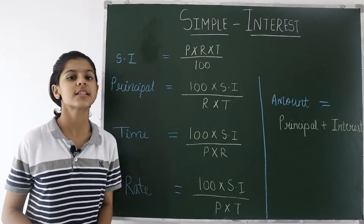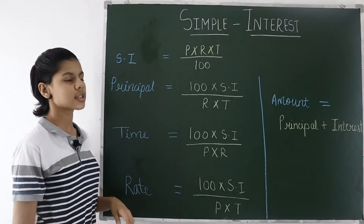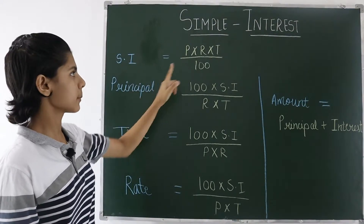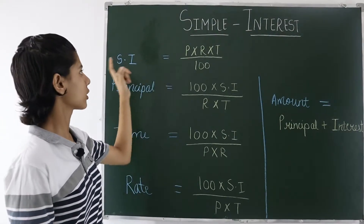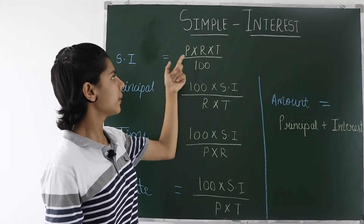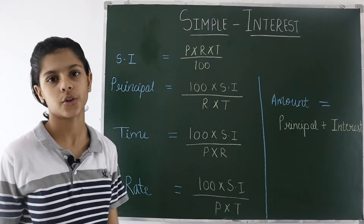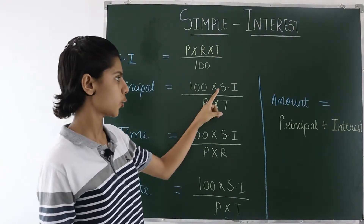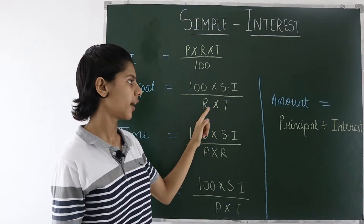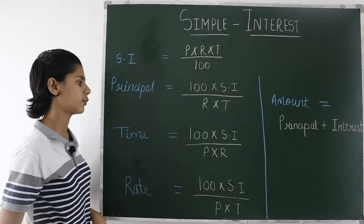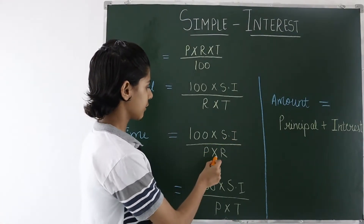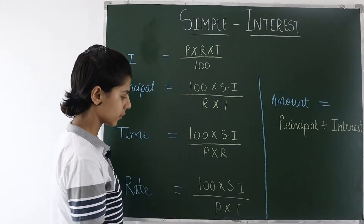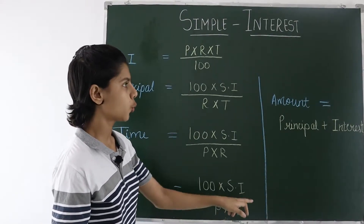Now we will see how to calculate them. The short forms are: P for Principal, R for Rate, and T for Time. For calculating Simple Interest, the formula is: SI = (P × R × T) ÷ 100. For calculating the Principal: P = (100 × SI) ÷ (R × T). For Time: T = (100 × SI) ÷ (P × R). For Rate: R = (100 × SI) ÷ (P × T). And for Amount: Amount = Principal + Interest.